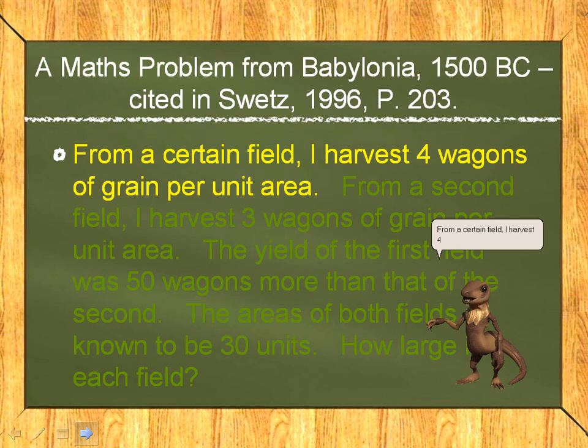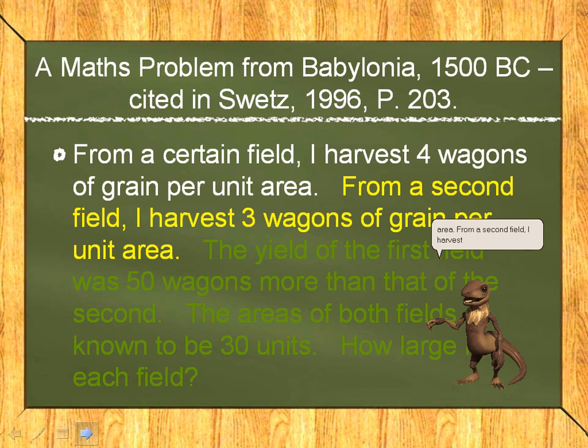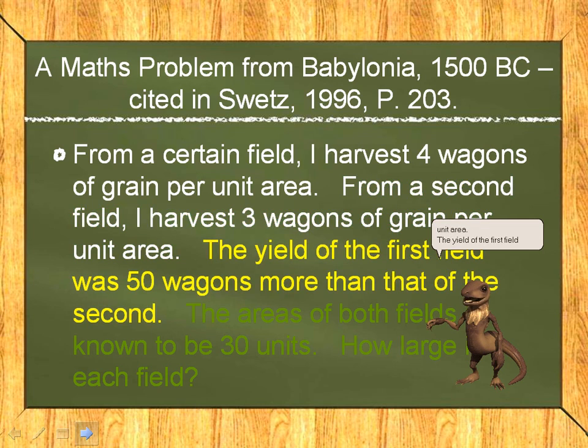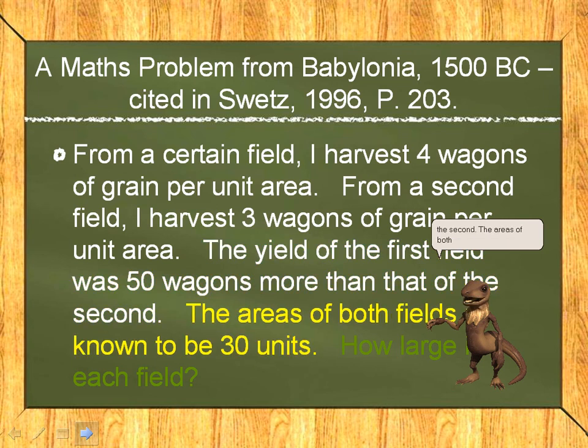From a certain field, I harvest four wagons of grain per unit area. From a second field, I harvest three wagons of grain per unit area. The yield of the first field was 50 wagons more than that of the second. The areas of both fields is known to be 30 units. How large is each field?